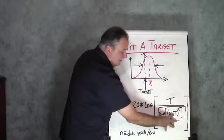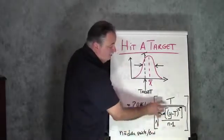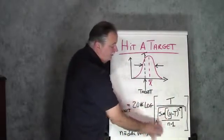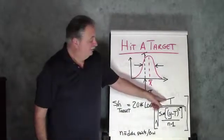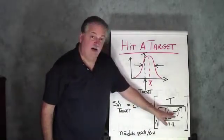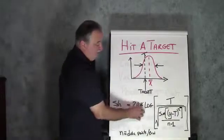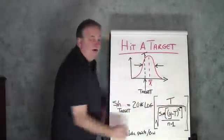divide that by n minus 1, where n is the total number of data points per experiment run. We're going to take the square root of that thing, and then it becomes the denominator, and the numerator is the target value. So, the target value is now divided by this, and it's 20 times the log of this calculation.